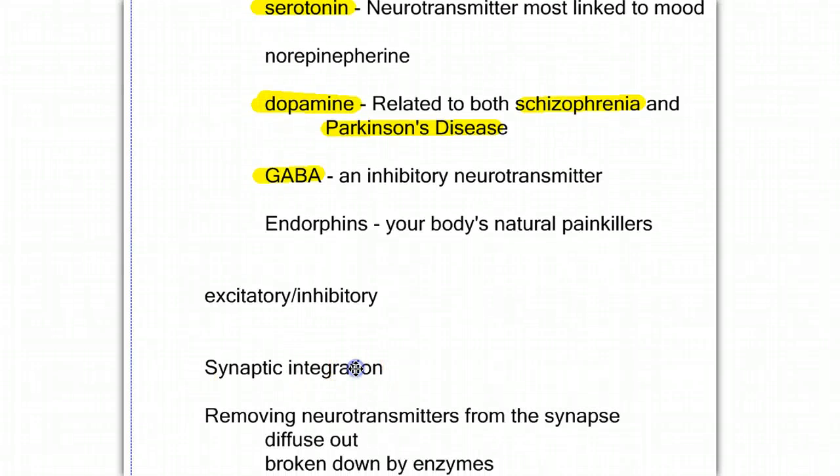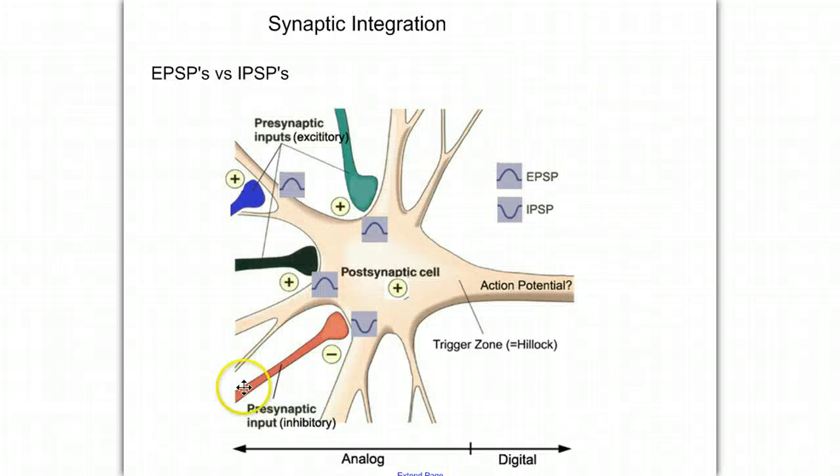Let's next talk about synaptic integration. When we talk about synaptic integration, we need to look at this drawing. Here we have one receiving neuron with multiple inputs, the green, the blue, the black, and the red. We have more than one piece of information coming in. Some of these pieces of information coming in are excitatory. They are EPSPs, excitatory postsynaptic potentials. They are going to cause sodium ions to come in and stimulate this neuron, bringing the potential, the membrane potential, up towards threshold.